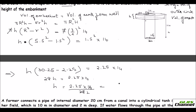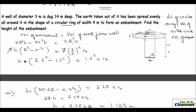Therefore h = 31.5 / 28 = 1.125 meters. Just to clarify: the inner radius of the embankment is 1.5 (the well's radius), and since the thickness is 4 meters, the outer radius is 1.5 + 4 = 5.5 meters. Hope this problem is clear.